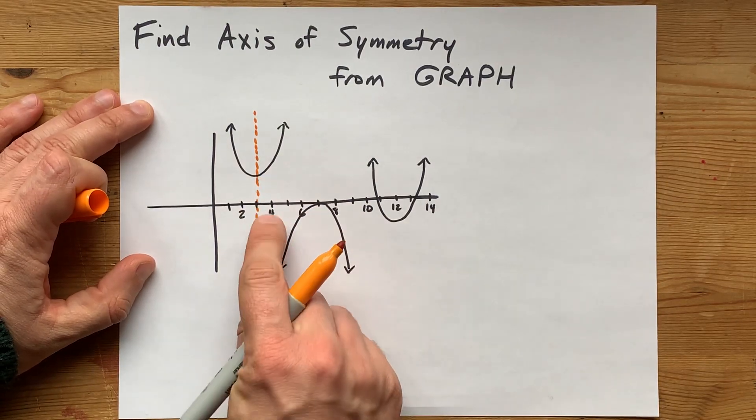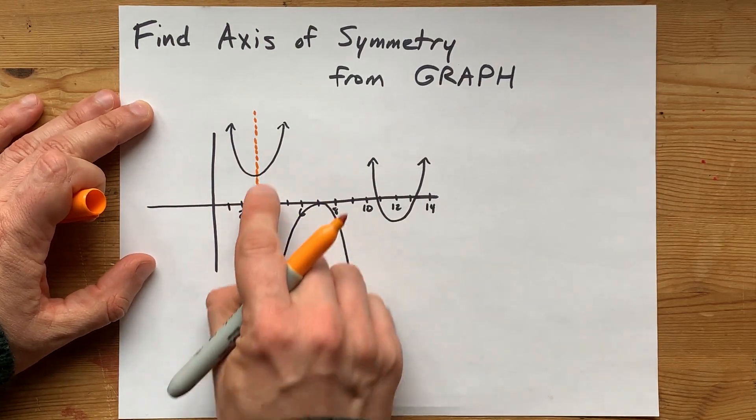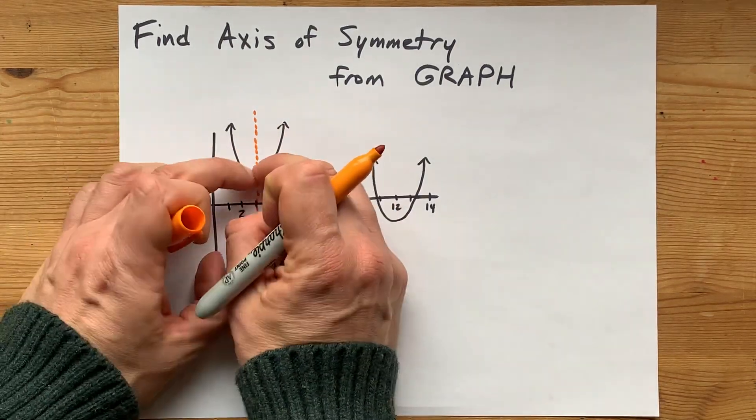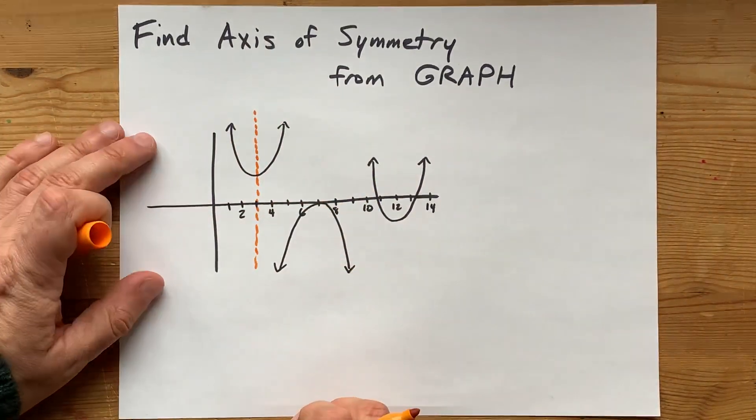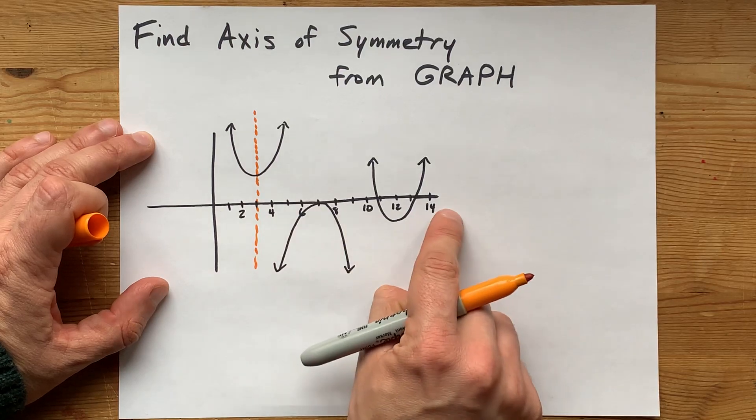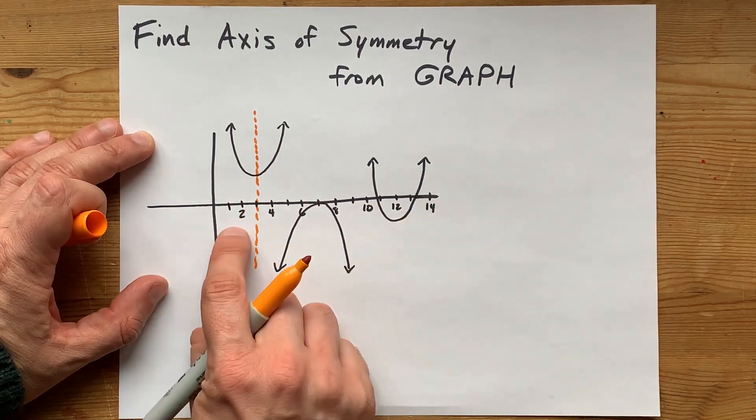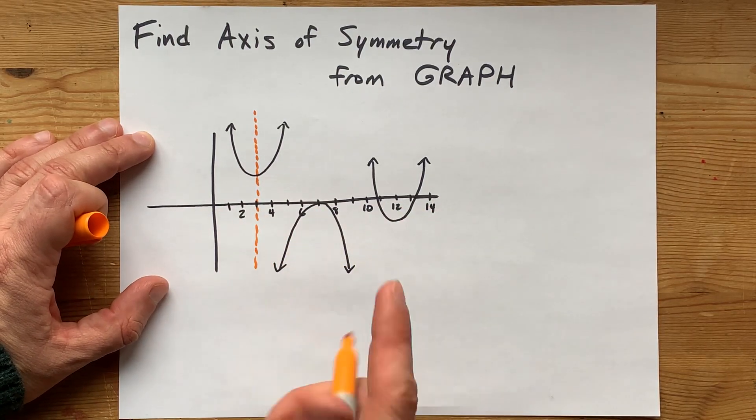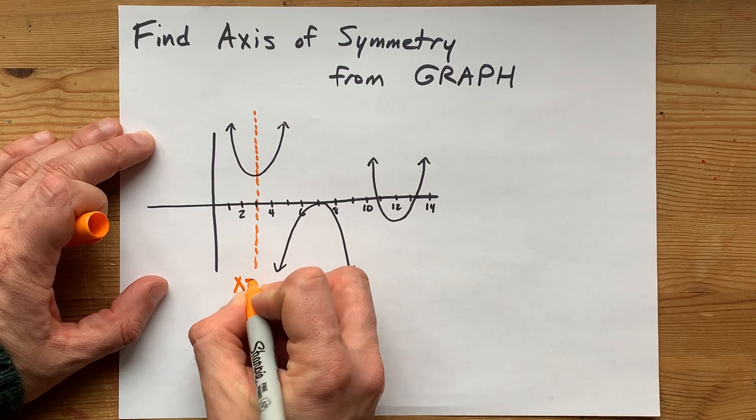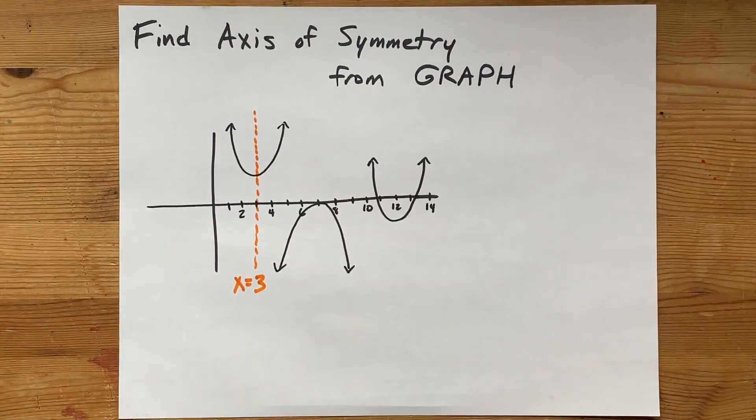For this parabola here, I don't know how high that vertex is, but let's say that this is the line that cuts it in half. The left side is equal to the right side. Wherever that goes through the x-axis, that's the horizontal axis here, it looks to be about 3. That's your axis of symmetry, x equals 3. State it, and you're done.